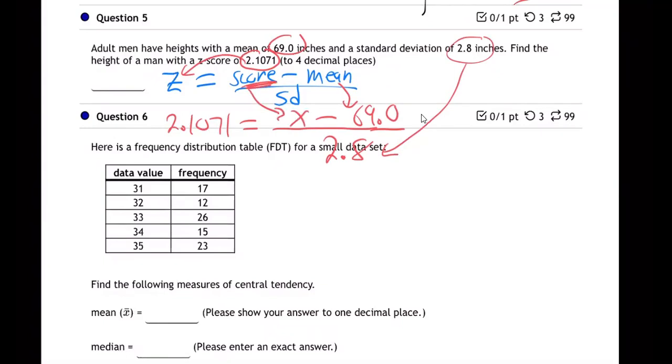And that's what we're trying to solve for. We're going to have to solve an equation. We're going to use a little bit of algebra skills here. We don't do that very often in this class, but that's what we're going to need to do. So I plugged in the z-score 2.1071, the score is x, the mean is 69.0, the standard deviation is 2.8.